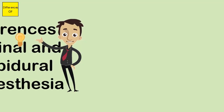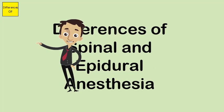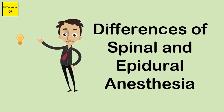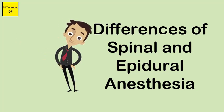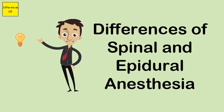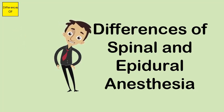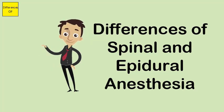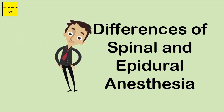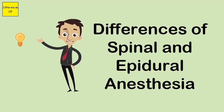The difference between spinal and epidural anesthesia: spinal anesthesia is simple, rapid, and reliable, while epidural anesthesia is more complex. Spinal anesthesia has a shorter onset time, normally two to five minutes, whereas the onset of epidural anesthesia is 20 to 30 minutes.